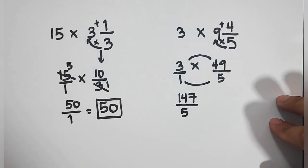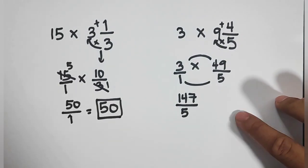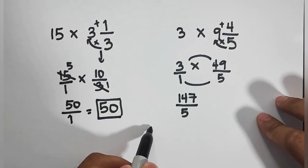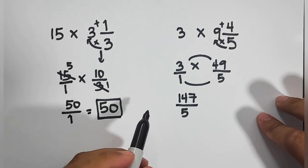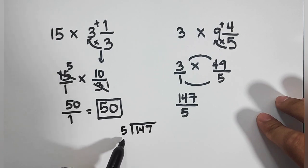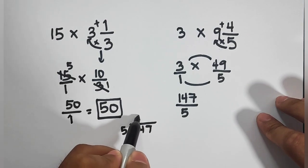And as you can see, we have here this 147 over 5. We need to express this into a whole number. So we will try to manually divide these numbers. So we have 147 divided by 5. 14 divided by 5 is 2. 2 times 5 is 10.